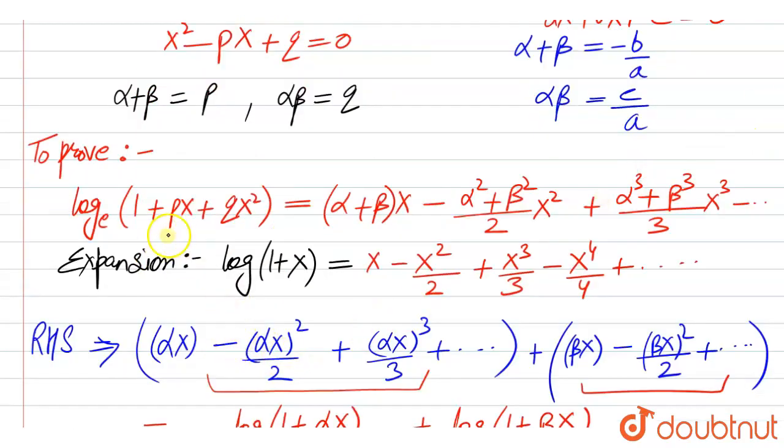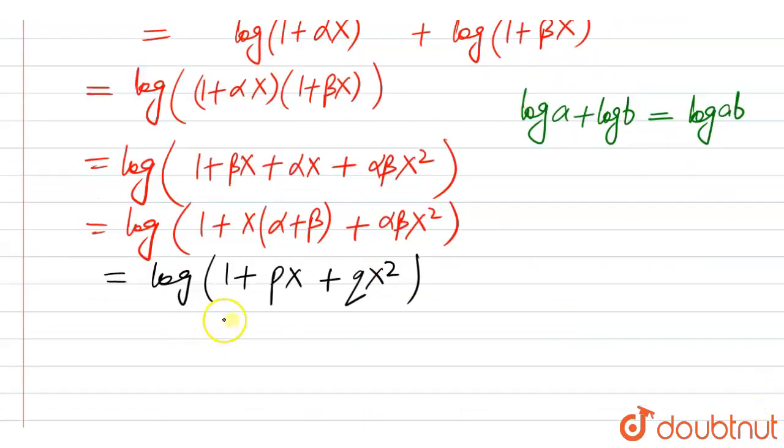So this is what we have on the left hand side, 1 plus px plus qx squared. So we can say that here, left hand side is equal to right hand side. Hence proved. Thank you.